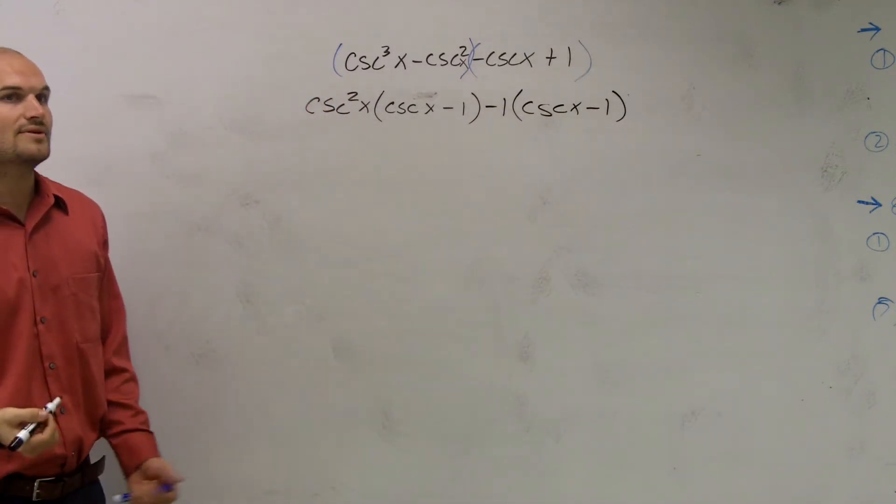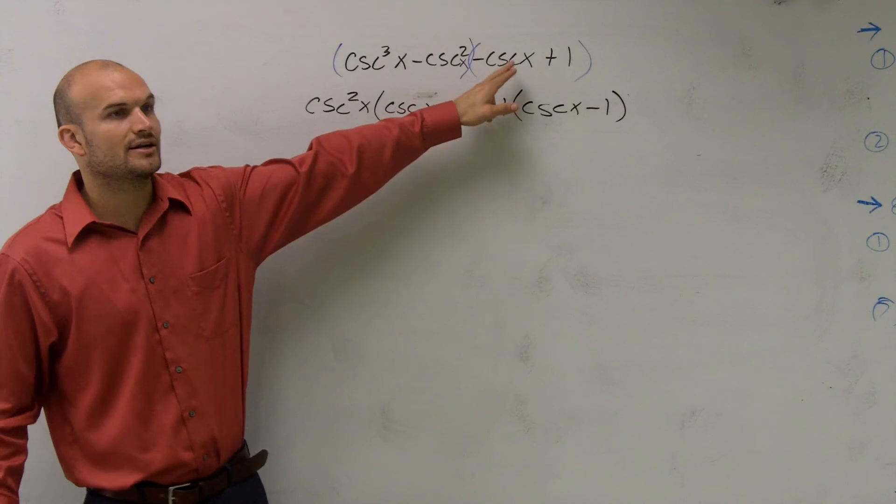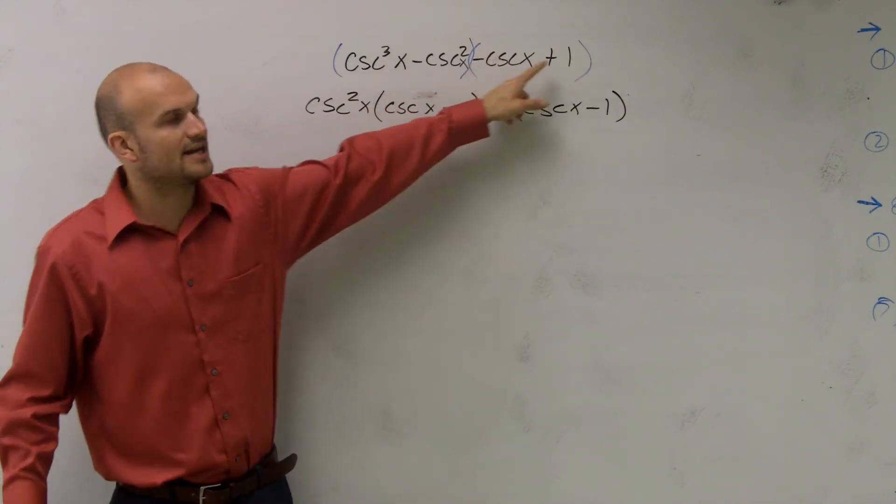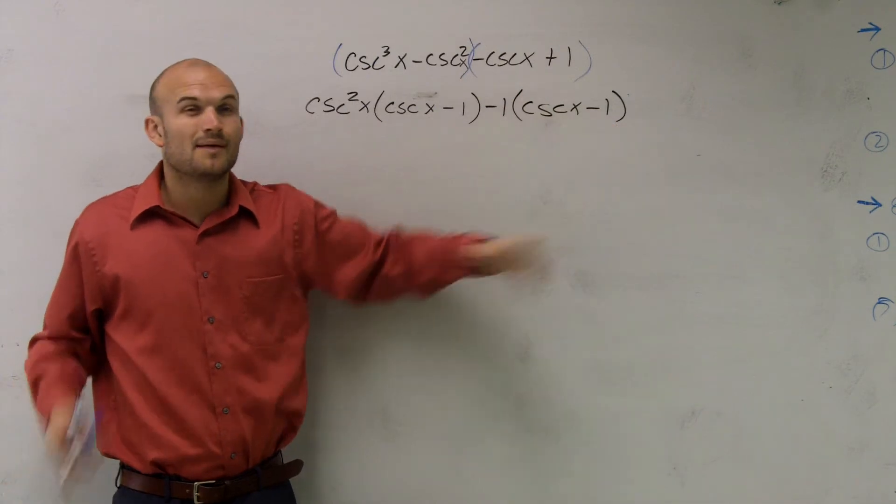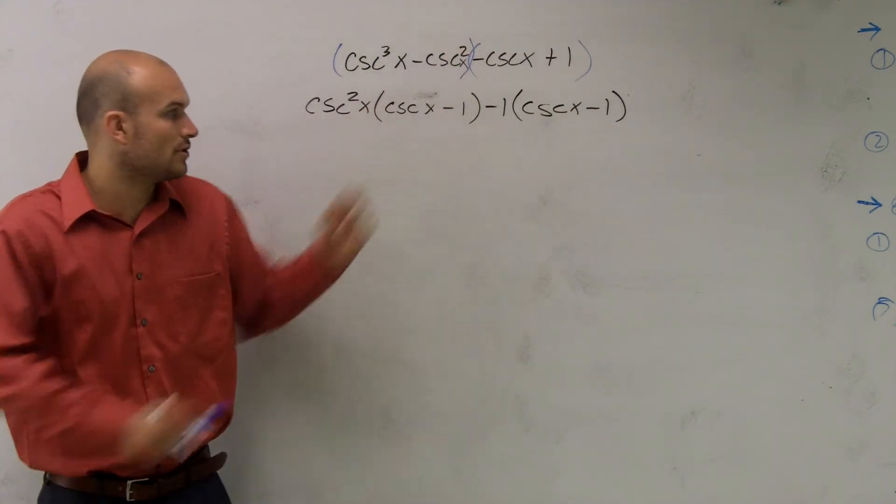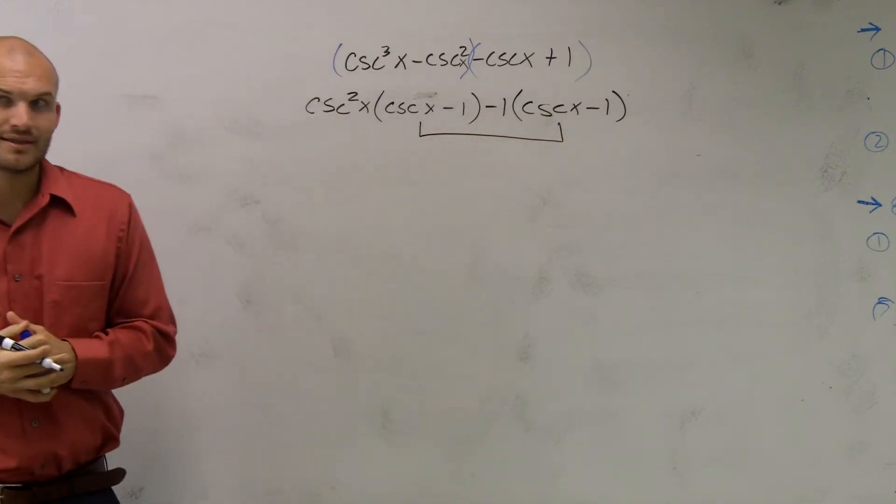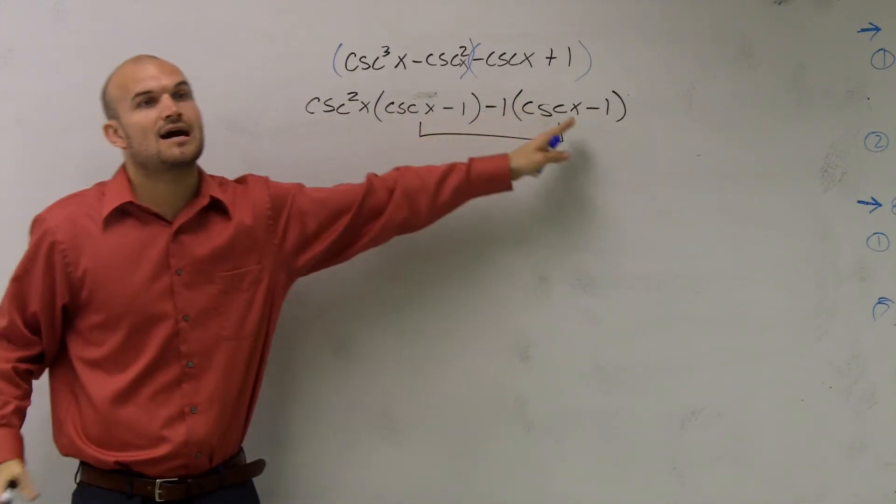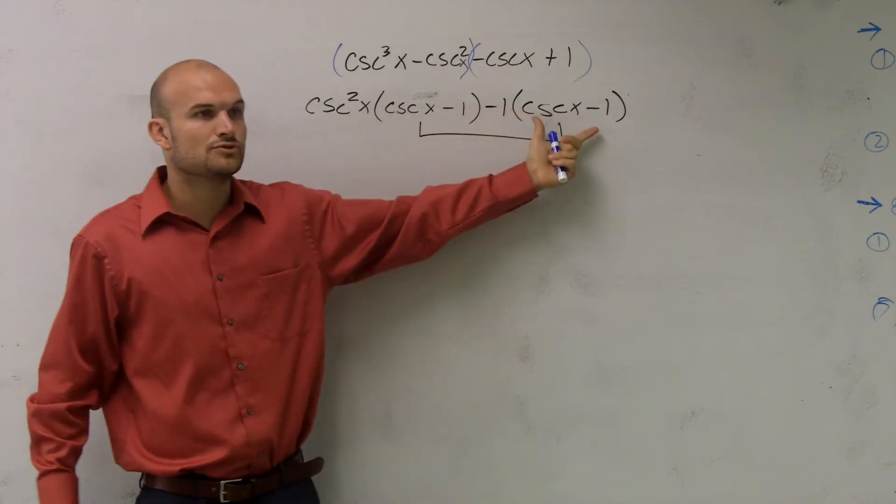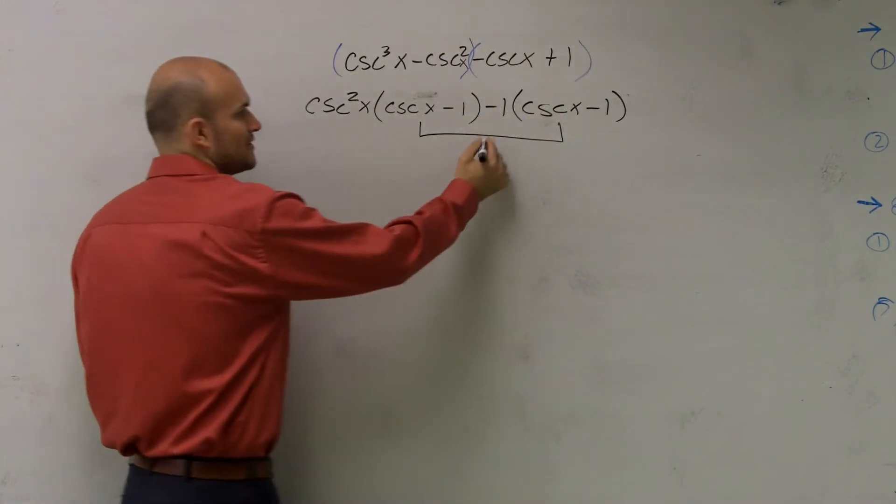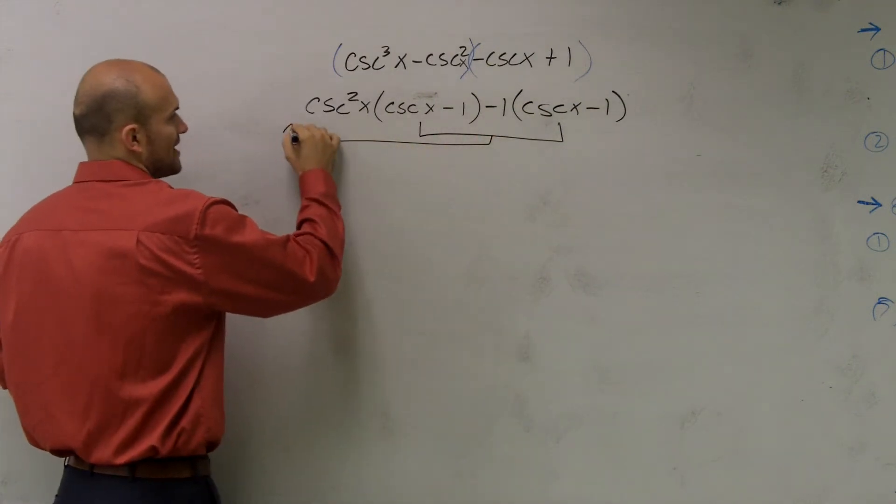So now, what I did was I just factor out a negative 1. Take out a negative 1 from there, I get positive. Take out a negative 1 from positive 1, I get a negative 1. But the reason why I chose a negative 1 rather than a positive 1 is because you want these two to be the same. Why do you want them to be the same? Because you notice they are a common factor of these two terms. Because that's what you're trying to do is you're trying to get another common factor that you can factor out.